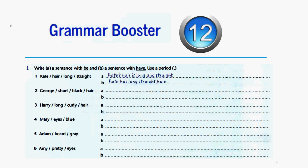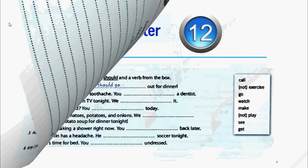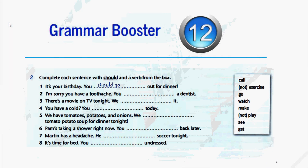Siguiendo estos ejemplos vamos a escribir dos oraciones con cada caso con la información provista, asegurándonos de terminar cada oración en un punto y aparte. Let's proceed immediately to exercise 2: complete each sentence with 'should' and a verb from the box.